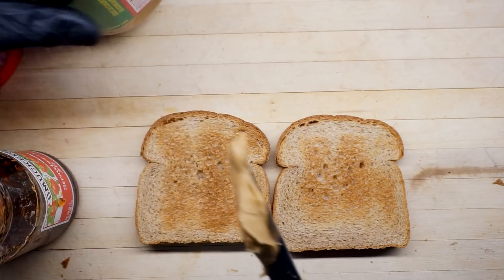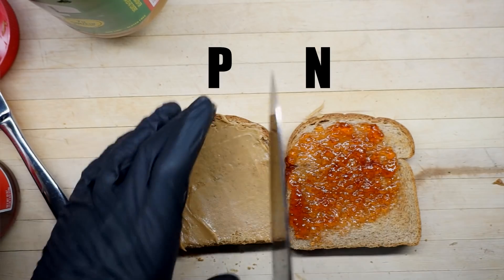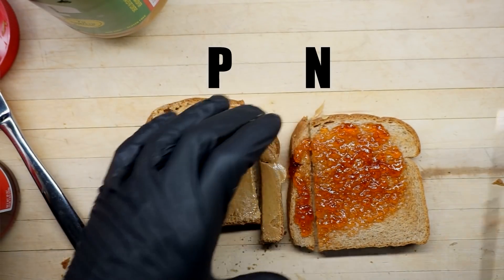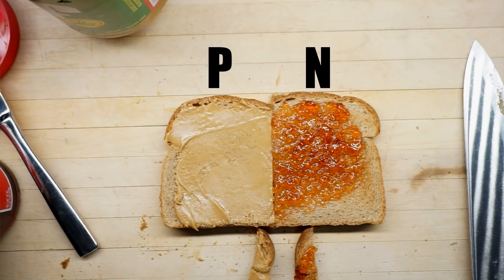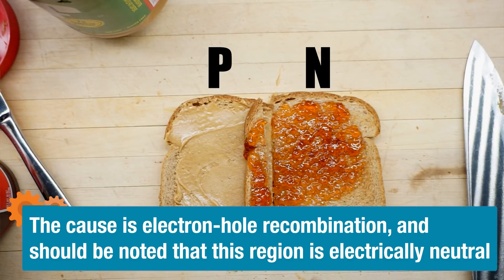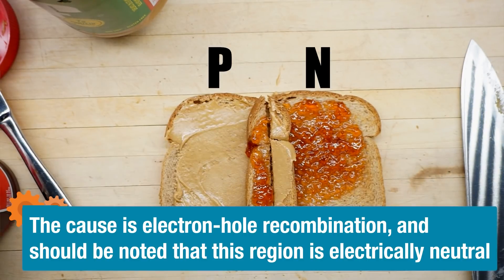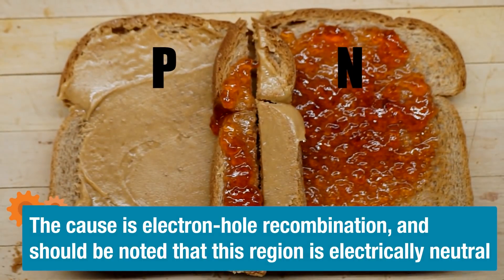Peanut butter will stand in as our P-type material, where we have a lack of electrons, and jelly will stand in as our N-type material, with an excess of free electrons. As I dope my intrinsic substrate with impurities, a natural equilibrium is created where the two materials come into contact with each other. This is known as the depletion region, where electrons and holes swap places until that equilibrium is reached, and a kind of barrier develops.